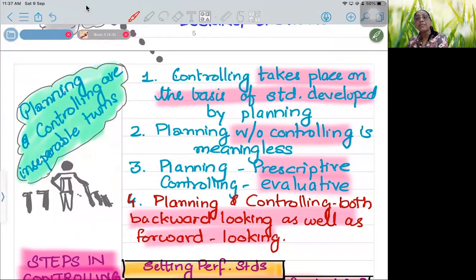But controlling is also looking forward. Why? Because this time we controlled, we got results, and on that basis we do the next planning. Suppose we have planned that we must have hundred units per day. We controlled, we kept all the measures, and our output came 90. So we saw why this happened - we wanted hundred, why did it become 90? We tried to find out the cause. We found that we have less labor.